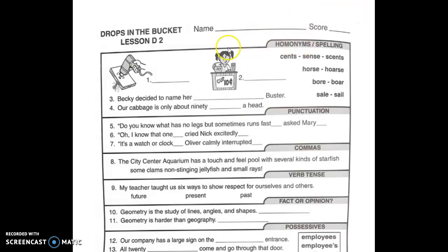The first section is homophones. Words that sound the same but they mean something different and they're spelled differently. This is a picture of a drill. The answer is bore. He is going to bore a hole in that wood. This little girl is selling lemonade so this is going to be the word sail. S-A-L-E.